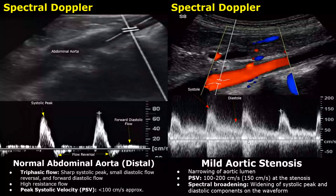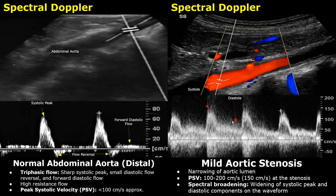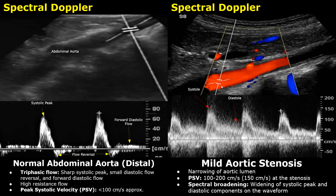Now we will look at abnormal spectral Doppler studies regarding the abdominal aorta. Stenosis is the narrowing of the artery due to a thrombus or plaque. Normal peak systolic velocity is usually less than 100 cm per second, though in some patients it may be 110 or 120 cm per second. In mild aortic stenosis, the PSV is between 100 and 200 cm per second. You also notice that the waveform is wider and appears more rough compared to the normal waveform.